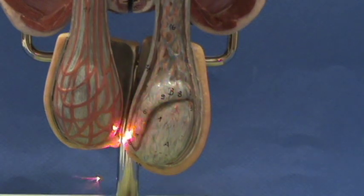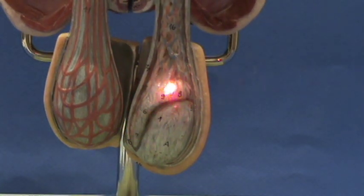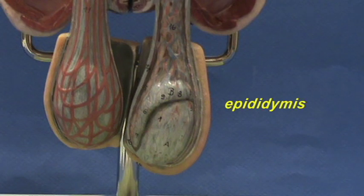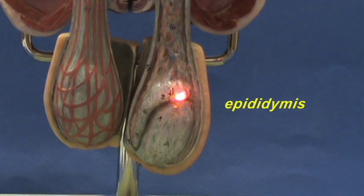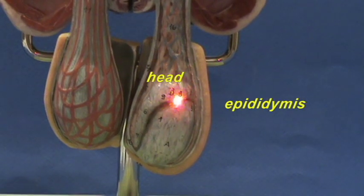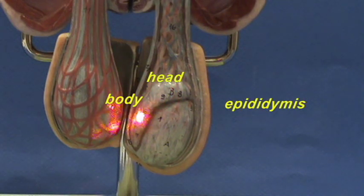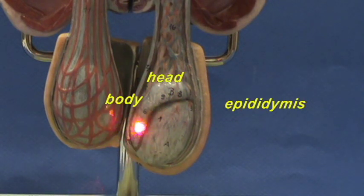On the posterior of the testis, we will find a very long convoluted tube, which is referred to as the epididymis. The epididymis is a rather complicated structure. We can divide different sections of it into the head of the epididymis, which is right over here on the superior pole of the testis; the body, which is right over here; and finally, the tail.